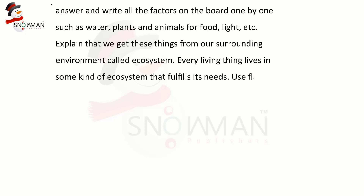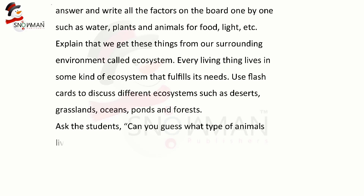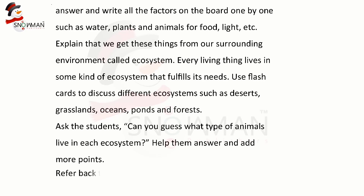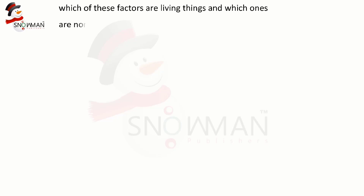Use flashcards to discuss different ecosystems such as deserts, grasslands, oceans, ponds, and forests. Ask the students: can you guess what type of animals live in each ecosystem? Help them answer and add more points. Refer back to the list of different factors of survival you wrote on the board. Ask the students: can you tell which of these factors are living things and which ones are non-living?